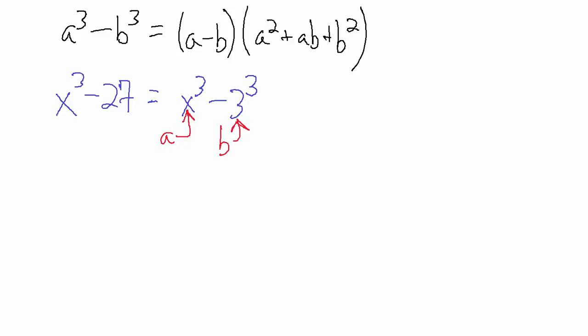Okay, so when we use our formula, then what are we gonna have? Well, the formula says to factor this into A minus B. So x is A for us and our B is 3, so A minus B is gonna be x minus 3.